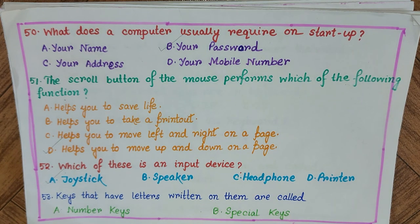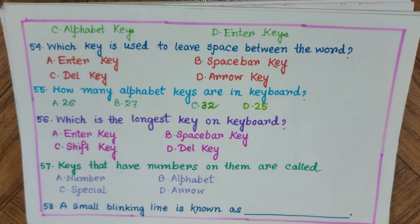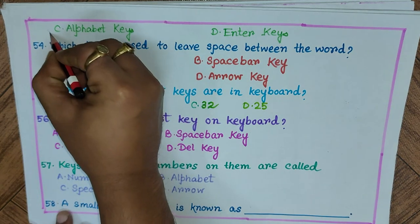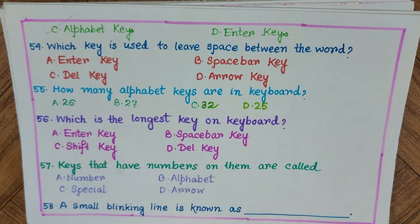Question 53: Keys that have letters written on them are called — A) number keys, B) special keys, C) alphabet keys, D) enter key. The options continue on the next page. The answer is C) alphabet keys, because alphabets are written on alphabet keys.